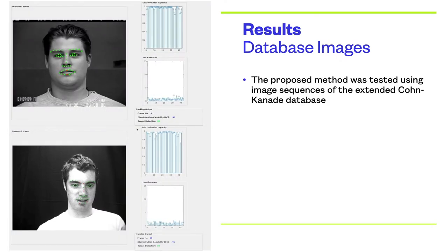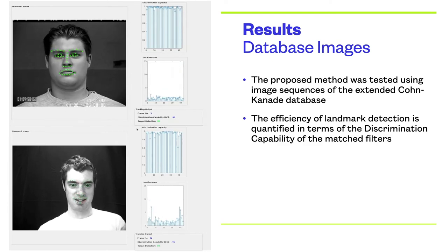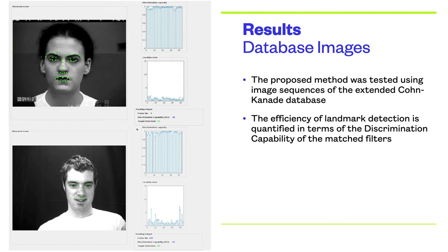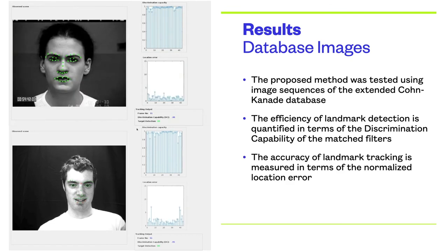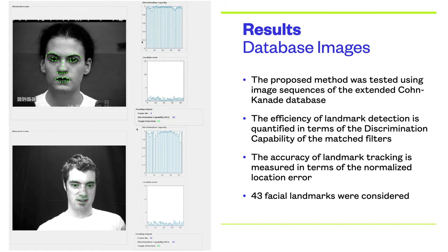Now we show some obtained results. The proposed method was tested using image sequences of the extended Cohn-Kanade database. The efficiency of landmark detection of the proposed method is quantified in terms of the discrimination capability of the matched filters. The accuracy of landmark tracking is measured in terms of the normalized location error. In these experiments, 43 facial landmarks were considered in each image sequence.